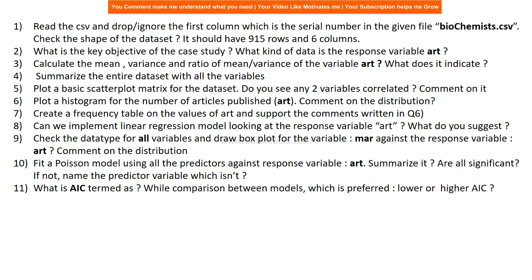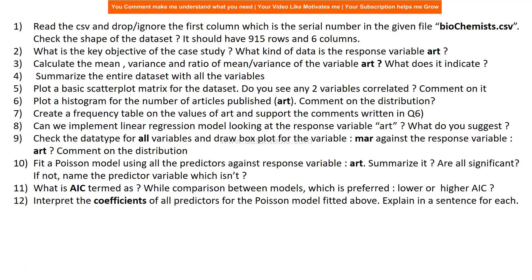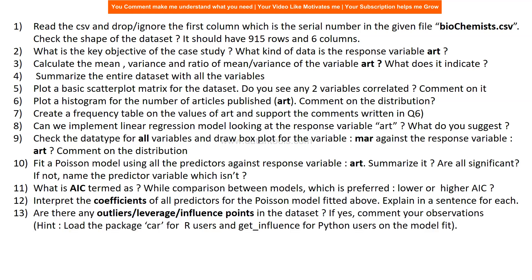After fitting the Poisson model, the important point is summarizing it, identifying whether predictors are significant, commenting on why they are or aren't significant. Then the question asks: what is AIC, why is it used, and when comparing between models, is a lower or higher AIC preferred? This is an important interview question about how you compare various models and what metric you use. Then interpret the coefficients of all predictors for the Poisson model and explain each in a sentence.